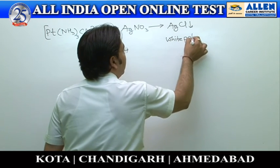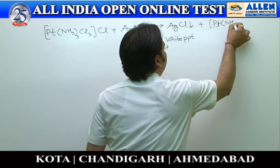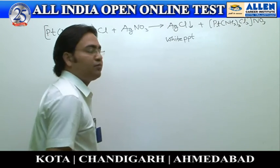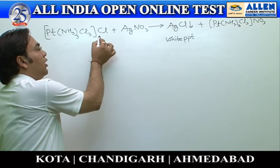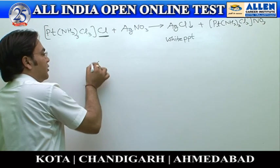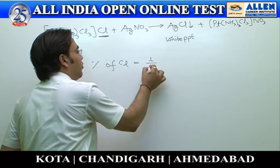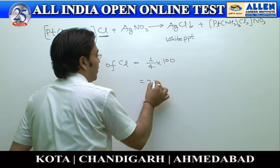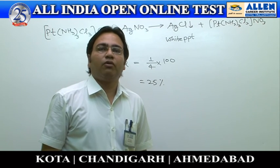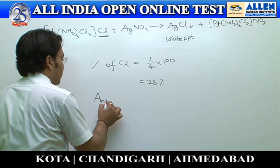A white precipitate is formed. This means that out of the 4 chlorine atoms, only 1 Cl is available for ionization. Hence, the percentage of Cl available for ionization is 1/4 × 100 = 25%. The answer is option 4.